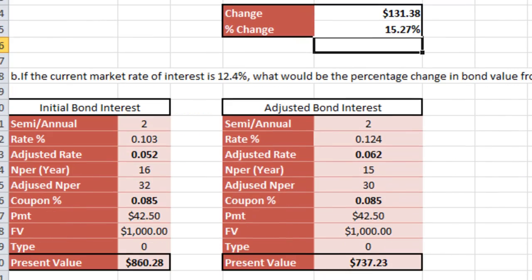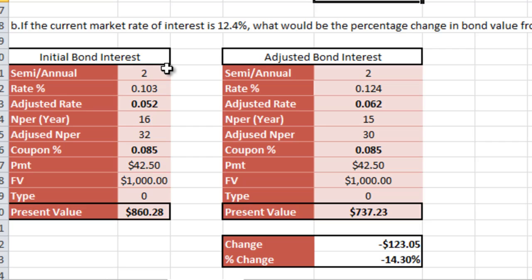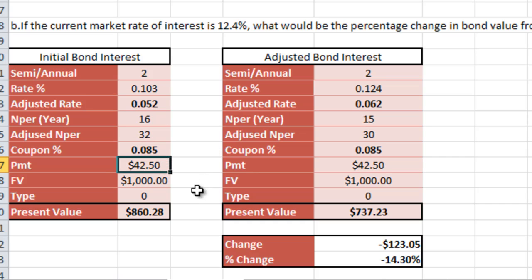Scrolling down, we're going to do the exact same thing again, except using 12.4%. Everything here stays the same: two for the semi-annual option, rate still at 0.103, NPER set to 16, coupon at 0.085, payment at $42.50, future value set to 1000, and present value at $860.28.